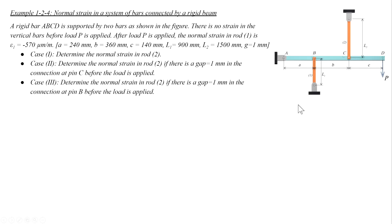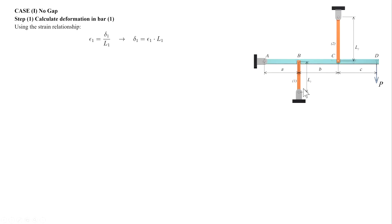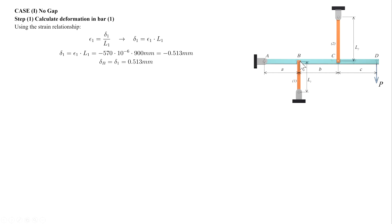Let's start with the first case, which is the simplest part. Given the amount of strain and the initial length of the element, we can determine how much is the deformation in element 1. Delta 1 is epsilon 1 multiplied by L1. Epsilon 1 is given to be negative, which means the element is getting compressed, so the amount of deformation is negative — the element got shorter.